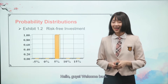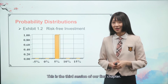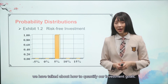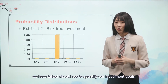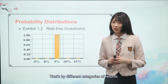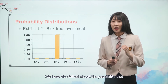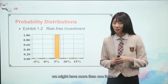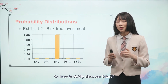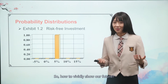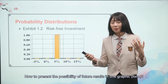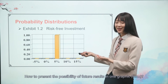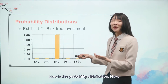Hello guys, welcome back. This is the third section of our first chapter. In the last section, we talked about how to quantify our investment goals by different categories of returns. We also talked about the possibility that we might have more than one future — how to vividly show our future, how to present the possibility of future results in one graphic. Here is the probability distribution.